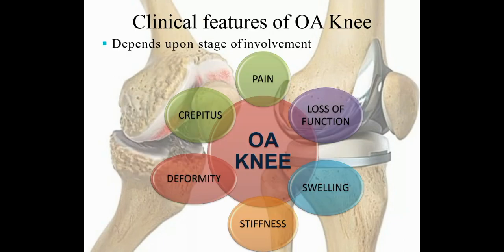The clinical features of OA knee depend on the stage of involvement. Symptoms include pain, loss of function, swelling, stiffness, deformity, and crepitus. These are the signs and symptoms that a patient with OA knee will have.